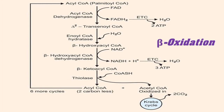In the third step, beta-hydroxyacyl-CoA is converted into beta-ketoacyl-CoA, producing NADH, which through the electron transport chain produces 3 or 2.5 ATPs. The enzyme required is beta-hydroxyacyl-CoA dehydrogenase. In the fourth step, beta-ketoacyl-CoA is converted into acyl-CoA with simultaneous production of acetyl-CoA, requiring coenzyme A addition. The enzyme is thiolase, producing one acetyl-CoA and a fatty acyl-CoA that is two carbons shorter than the original.